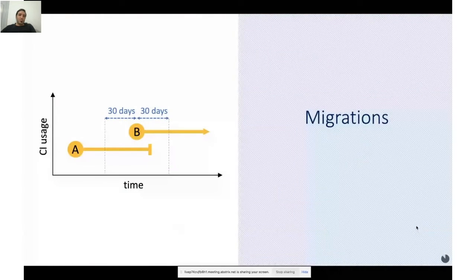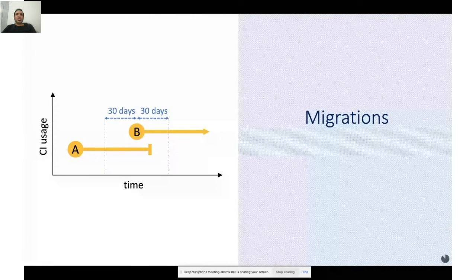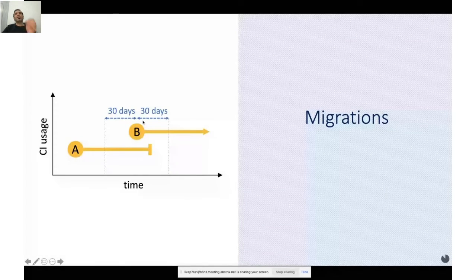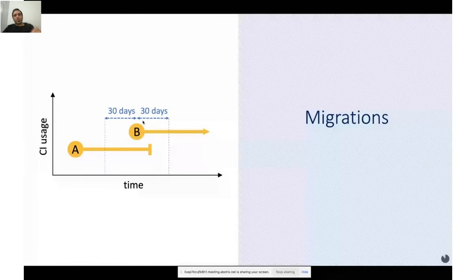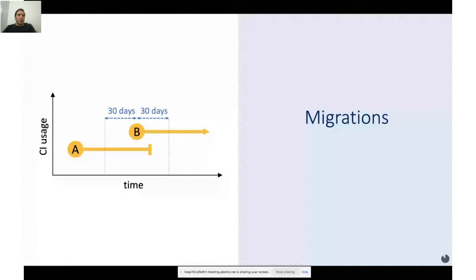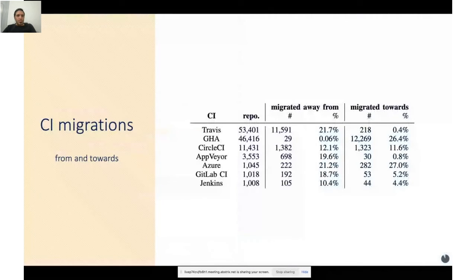We talked about GitHub migration but hadn't defined it. How do we define a migration from one CI to another? We consider a migration from CI A to CI B if it happens within 30 days before stopping using A and starting using B, or within 30 days after starting using B. Not all migrations are toward GitHub Actions and not all are from Travis. To analyze migrations, we created a table. From 53,000 repositories using Travis, we found 11,000 repositories migrating from Travis to others — almost 21% — with 29% going to GitHub Actions, and very few to other CIs.